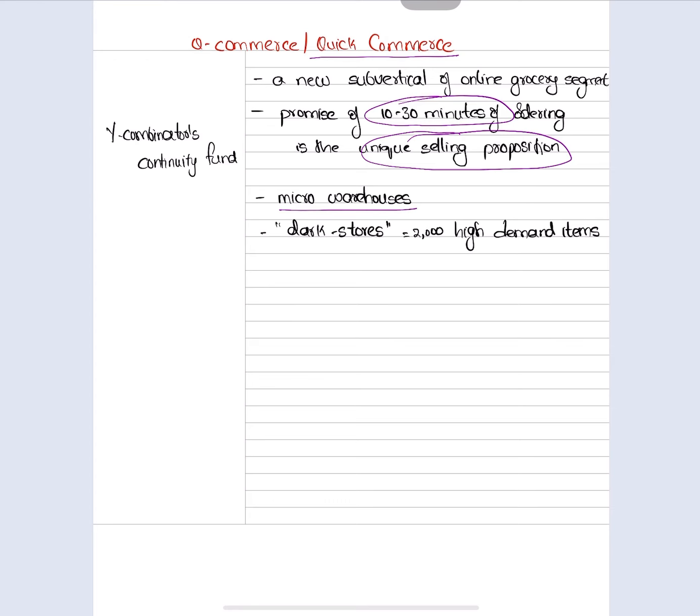Micro warehouses means let us assume there is a region, there is a town - they have three regions: A, B, and C. They operate micro warehouses, meaning instead of having a single warehouse at one place, they will have micro warehouses at each and every area. They will not keep all the items - they will keep only a maximum of 2,000 different items which are high demand.